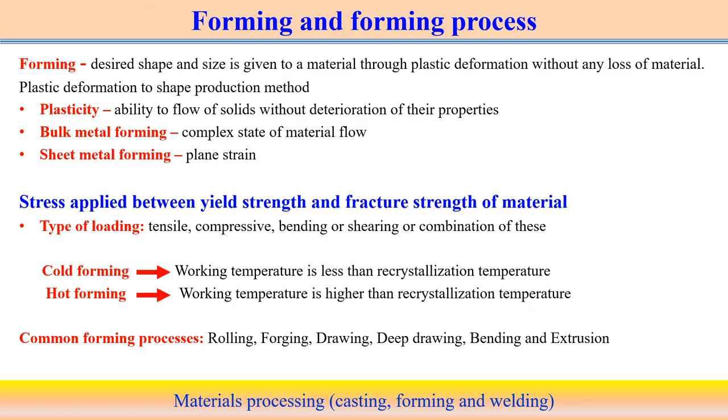The type of loading can be tensile, compressive, bending, or shearing — any combination of load is possible in metal forming. If the strength of the material is very high, it is very difficult to deform or requires much energy. So sometimes we facilitate the deformation process with the application of temperature. Based on temperature condition, it can be a cold forming process — performed at room temperature — or a hot forming process — performed at elevated temperature.